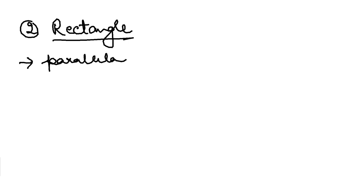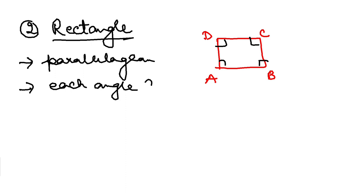Next one, number two is your next type of parallelogram is rectangle. Now what happens in a rectangle? It is also a parallelogram because the opposite pairs are parallel and each of the angles is 90 degrees. So we all know it is a rectangle. Opposite pairs are parallel and each of these angles are 90 degrees.